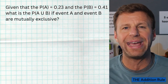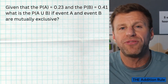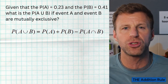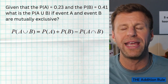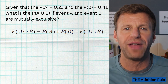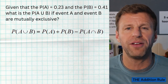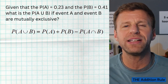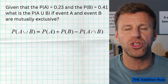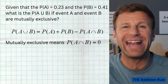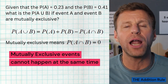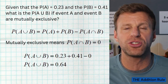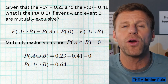In this first example, we are told that event A and event B are mutually exclusive. We're going to start with the addition formula — the king of formulas when it comes to probability. It is: P(A or B) = P(A) + P(B) - P(A and B). Write down that formula and fill in what we know: P(A) = 0.23, P(B) = 0.41. When two events are mutually exclusive, they cannot happen at the same time, which automatically tells us that P(A and B) = 0.